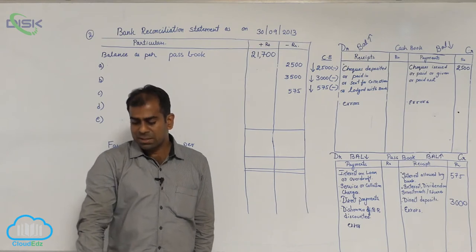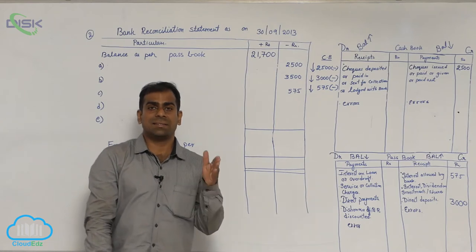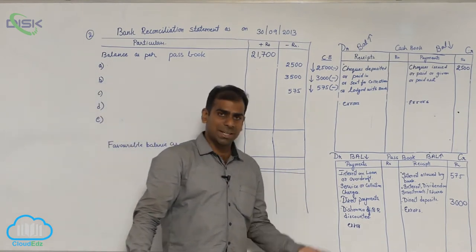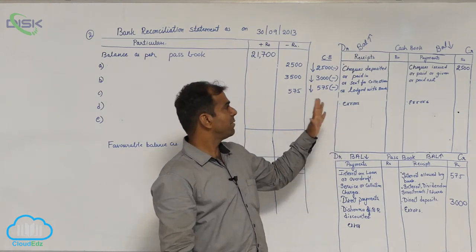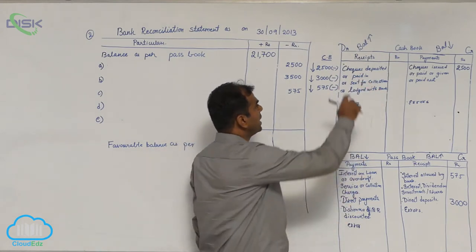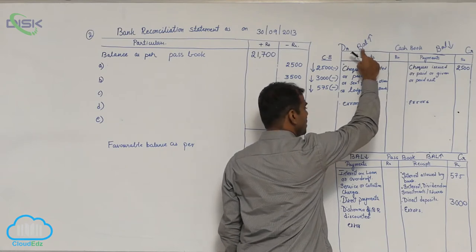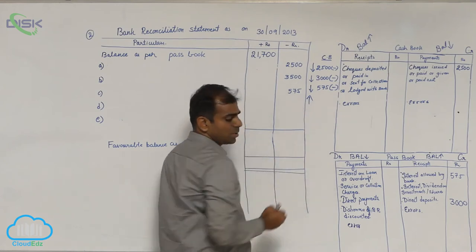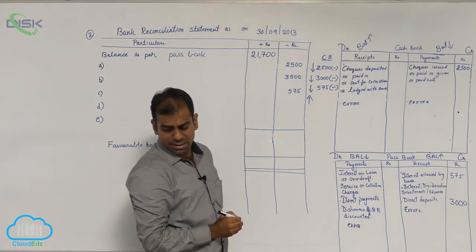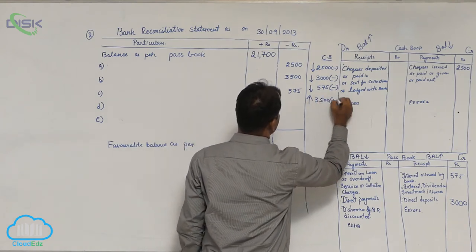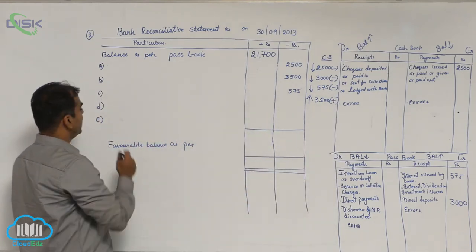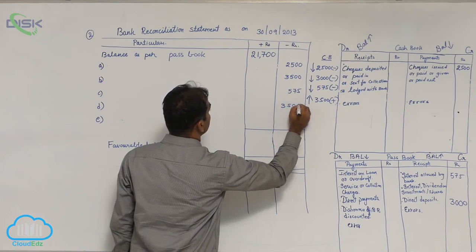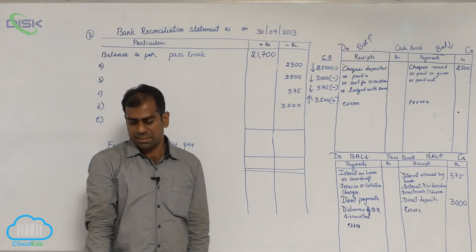The next item: cheques deposited in bank but not credited — rupees 3,500. Cheques deposited — who deposited? It is not stated, so it is you. When you deposit a cheque in the bank, you know about it first, so the entry will be made in the cash book on the debit side. When you enter anything on the debit side of the cash book, cash book balance should increase. Since cash book balance is increasing, add the amount of rupees 3,500. Write: cheques deposited into bank — 3,500, add.